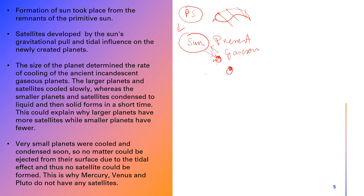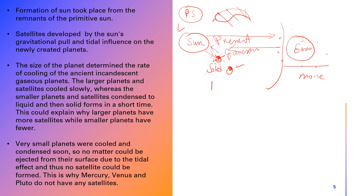Mercury and Venus are very small in size, so they cooled down very fast and became solid. Once solid, satellites could not form — that is why Mercury and Venus have no satellites. Larger outer planets were gaseous for longer, so their cooling was slow. Due to the sun's gravity they lost material, which formed satellites. Therefore, outer planets have more satellites while inner planets have fewer.